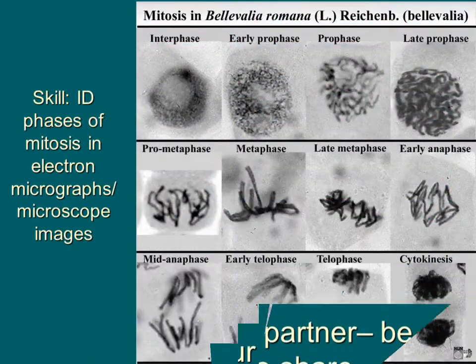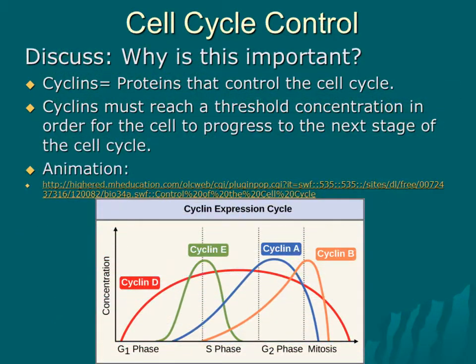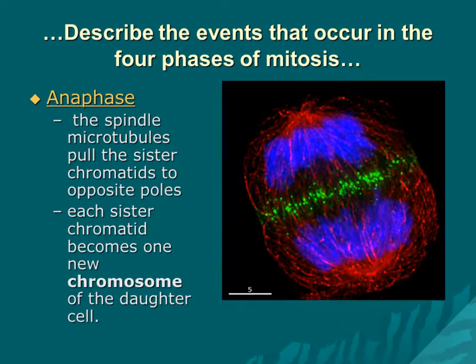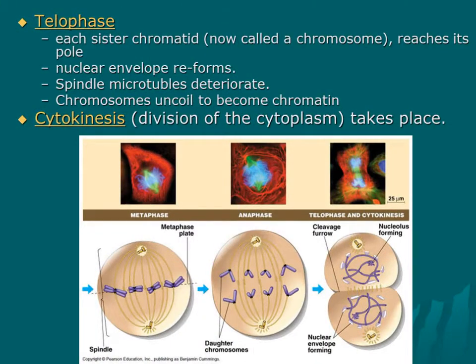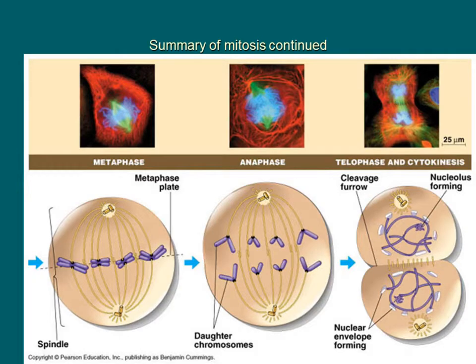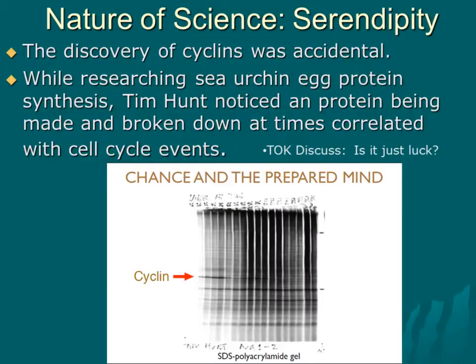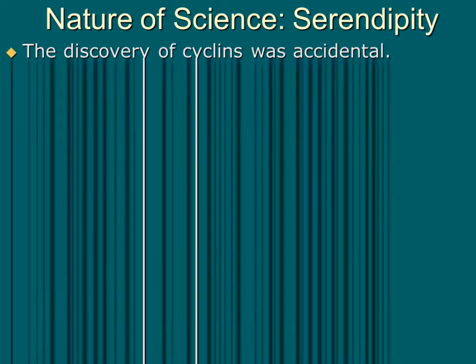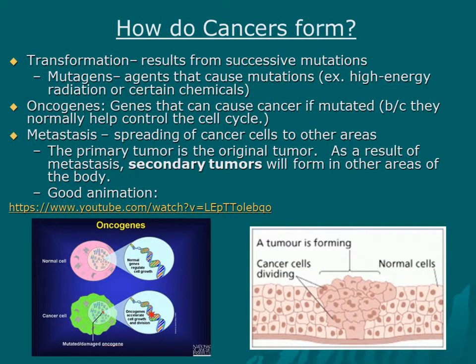The pancreas is located just behind the stomach. It is both an endocrine gland and an exocrine gland. The hormone-producing portion consists of clusters of cells called islets of Langerhans. Beta cells secrete insulin, which lowers the blood glucose level. Alpha cells secrete glucagon, which increases the blood glucose level. Gamma cells produce pancreatic polypeptide. Delta cells secrete somatostatin. Epsilon cells secrete ghrelin, a growth hormone inhibiting hormone.